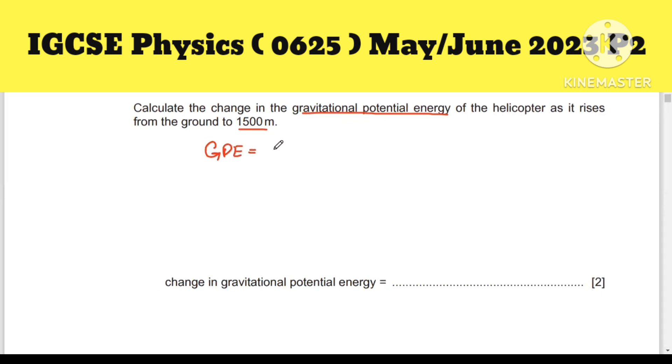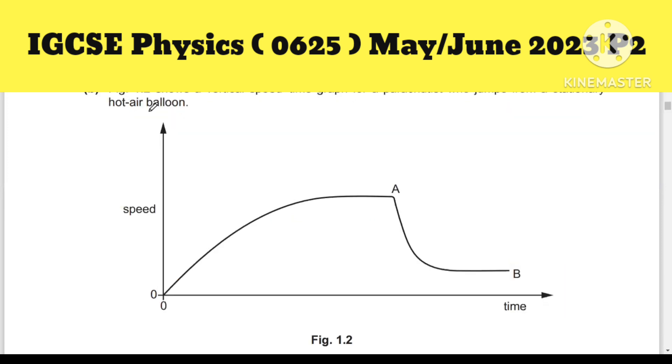GPE equals mass times gravitational acceleration times height. So m equals 3200 kg, g is 9.81, and height is 1500 meters. After calculating, you will get 4.7 × 10^7 joules in two significant figures. Don't forget to write the unit, which is joules.